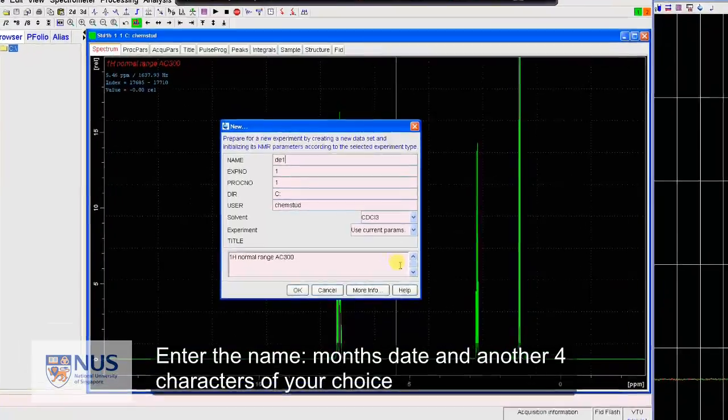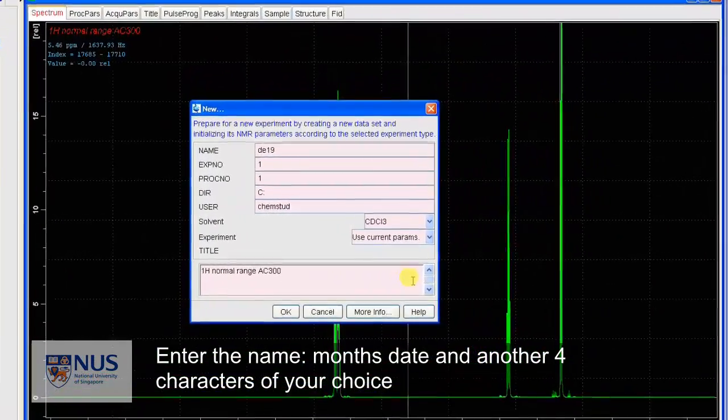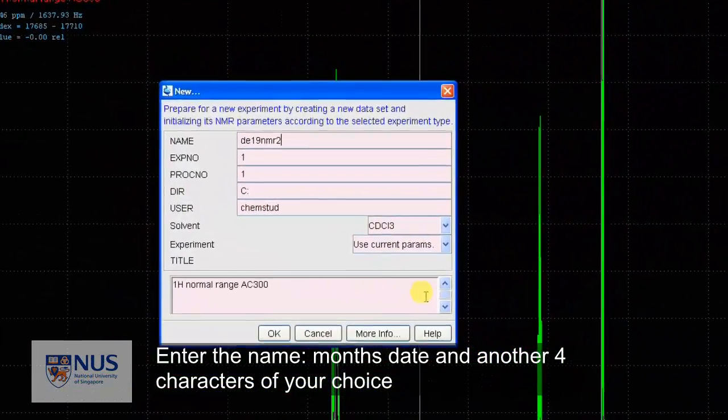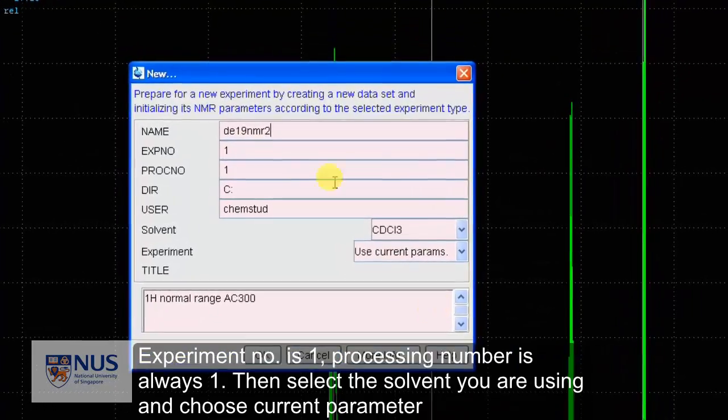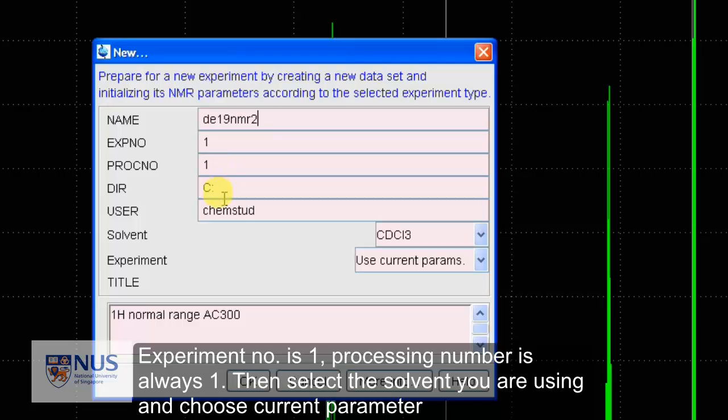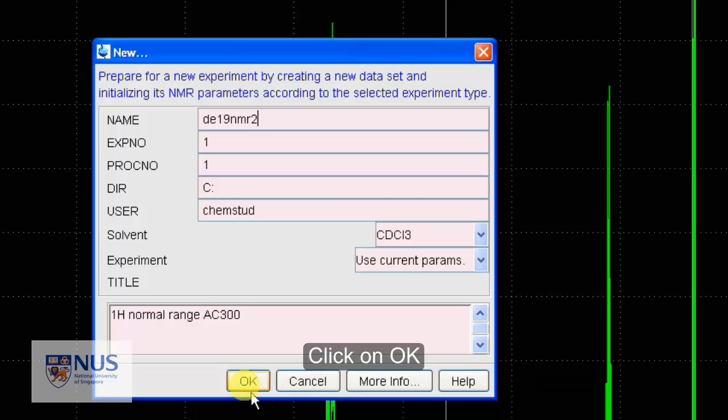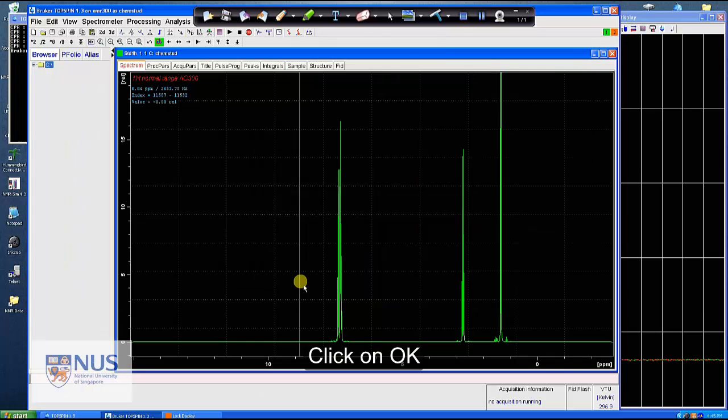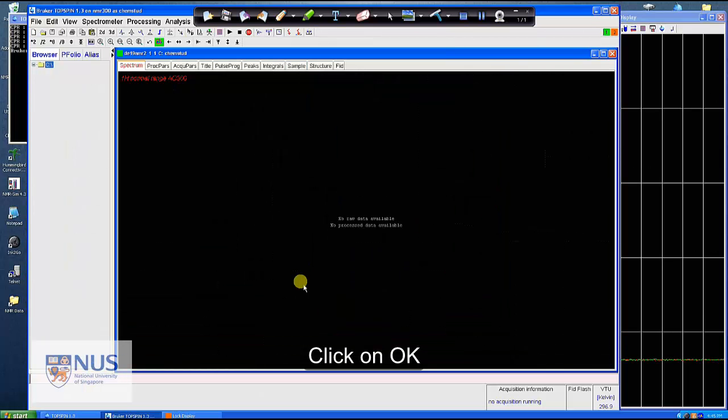Now enter the name in month, month, date, date, and another 4 characters of your choice. Experiment number is 1. Processing number is always 1. Then select the solvent you are using and choose the current parameter. Type the title to indicate your sample name and conditions. You can also do it later. Click OK.